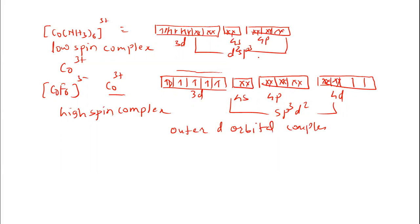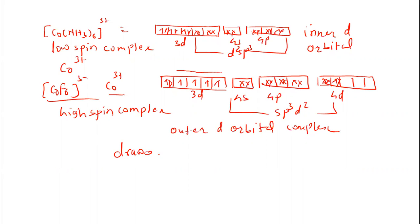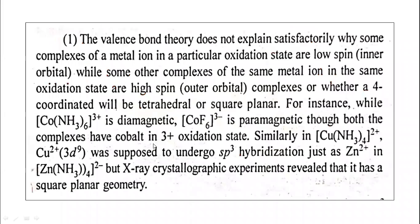Valence bond theory has no proper explanation for this. The same metal ion, with the same coordination number and oxidation state, shows a low spin inner orbital complex in one case and an outer orbital complex in another. This is the drawback of valence bond theory — it could not explain this satisfactorily.